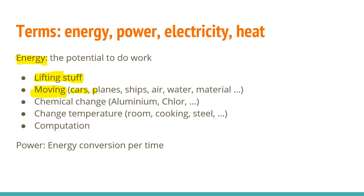Ships have friction against the water, though not as much as airplanes, so ships are usually a very efficient way to transport goods. Moving air — for example in an air conditioner or a ventilator — needs energy. The same is true with water: opening your water faucet and pushing water through pipes needs energy. For many materials, moving them also requires energy. This is the second big physical reason we need energy.